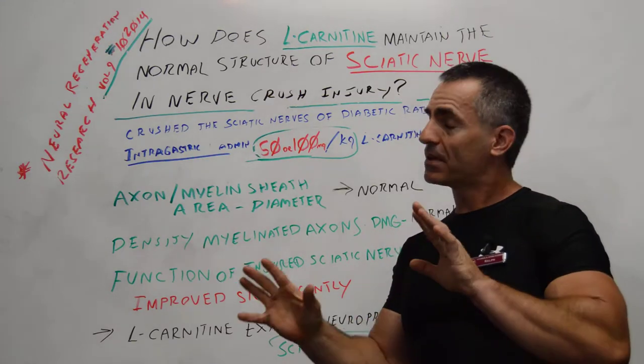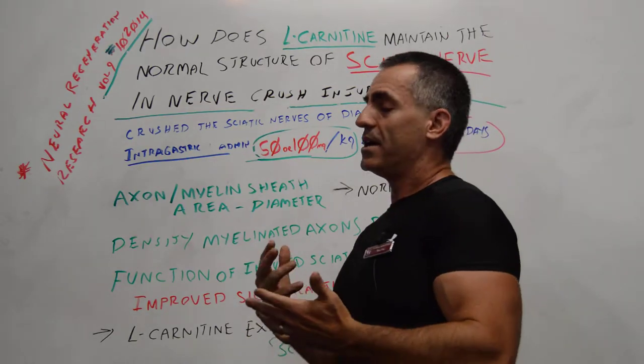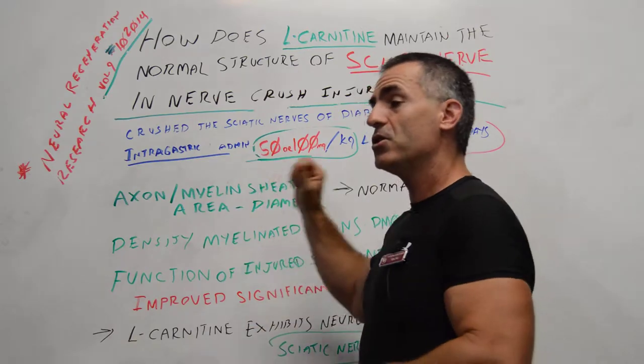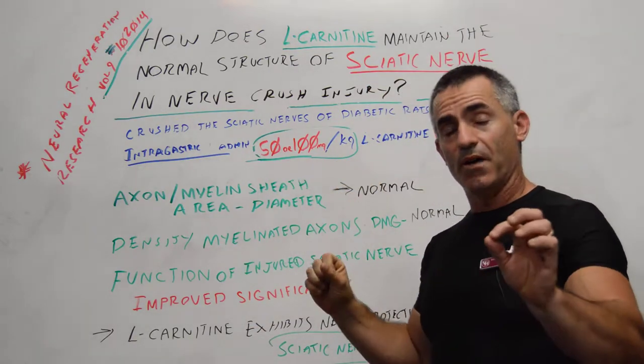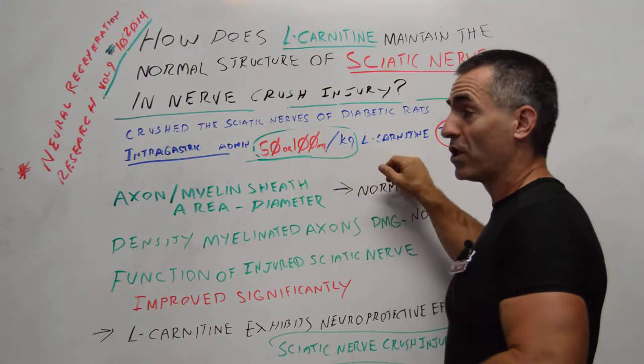Then after that, keep following me, I know it's kind of crude, intragastric, through the stomach, they administered 50 to 100 milligrams of the amino acid L-carnitine per kilogram body weight for the length of 30 days.